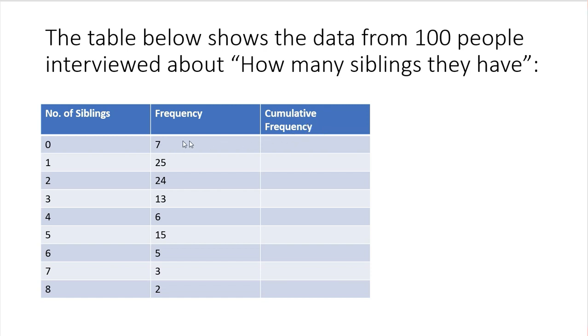Therefore, what you do, you copy the first frequency, add it to the next. So 7 plus 25 would give us 32. 32 plus 24 will give us 56. 56 plus 13 would be 69. 69 plus 6 would be 75. 75 plus 15 would be 90. 90 plus 5 would be 95. 95 plus 3 would be 98. And then 98 plus 2 is 100.